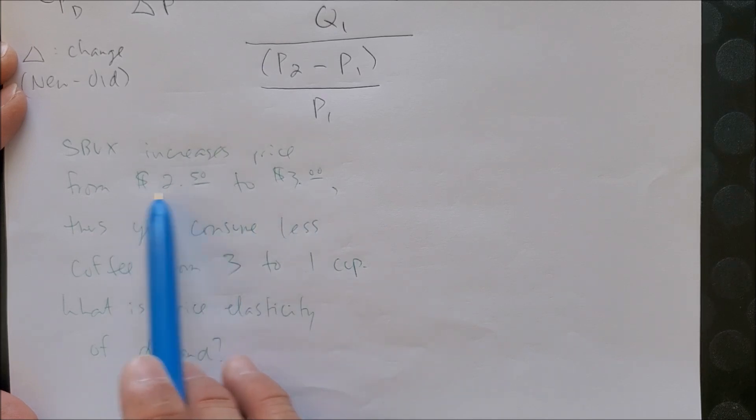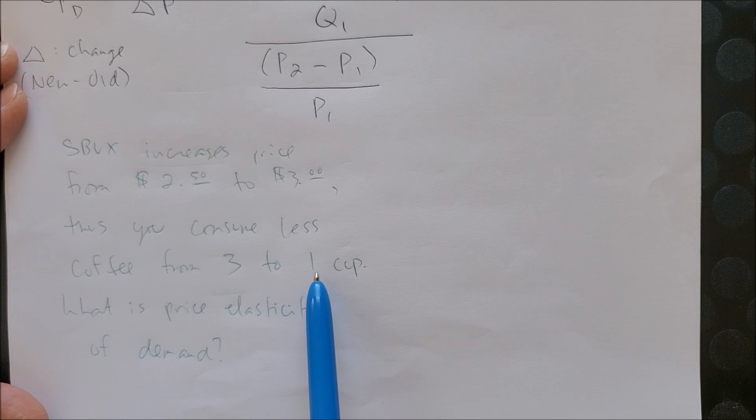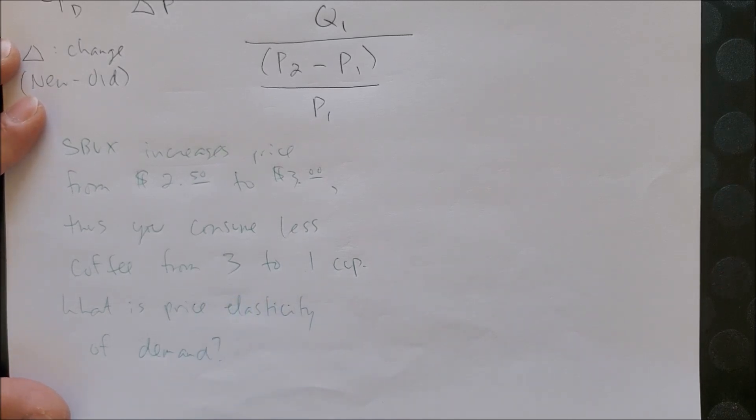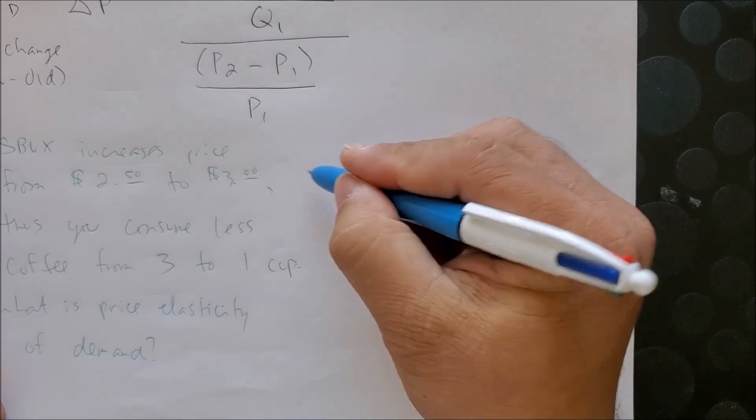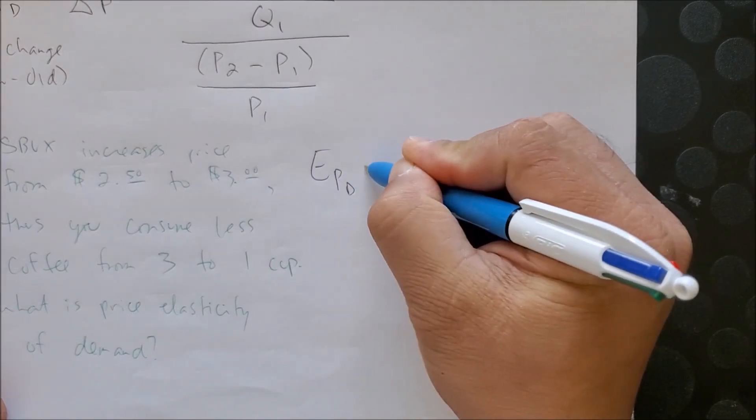And when we look at both from to, we know exactly which numbers represent the newer number. And since this represents quantity, we then focus on 1 as q2, 3 as q1. Let's go ahead and input that in our equation of E sub p sub d.